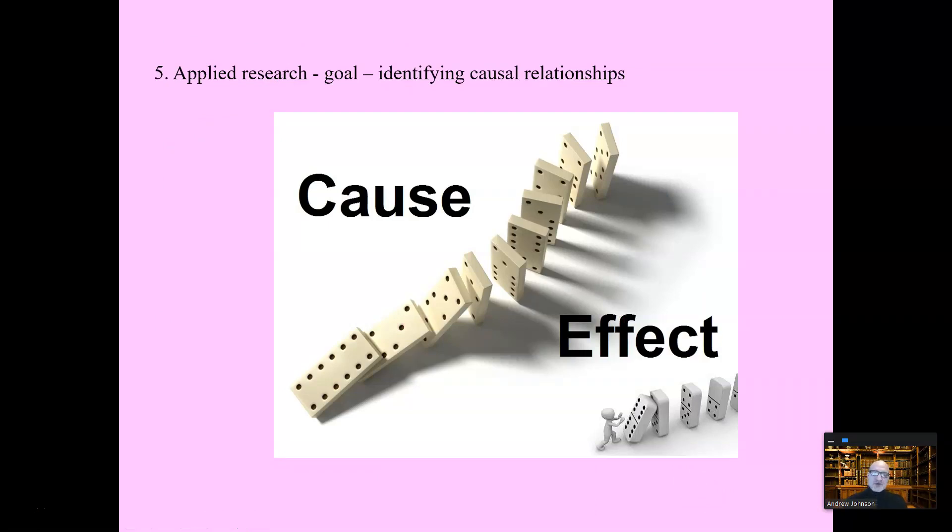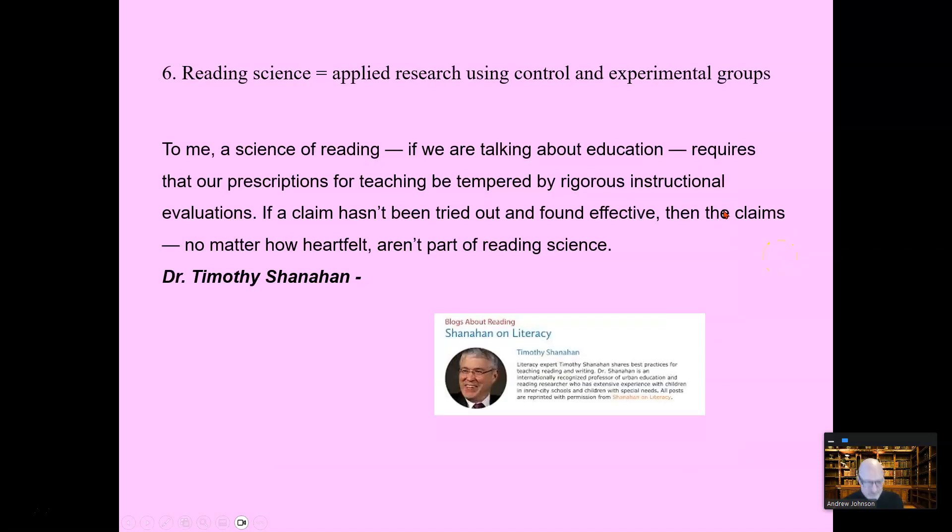Applied research, the goal is to identify causal relationships. One thing causes another thing to happen. Method A causes reading to occur. If you do this, that will happen. If we do this, more reading will happen or less reading will happen. That is applied research to find a cause and effect. Now, reading research is applied research, done in a classroom, using control and experimental groups. That's controlled experimental research.